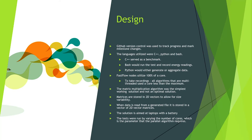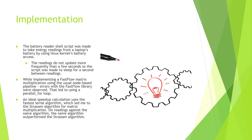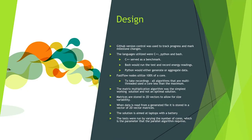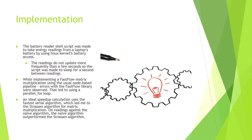Fastflow nodes utilize 100% of a core, so to take recordings, all algorithms that are multithreaded have to use one core less than the maximum. The matrix multiplication algorithm used was the simplest working solution and is not an optimal one. The matrices are stored in 2D vectors to allow for size variability. When data is read from a generated file, it is stored in a vector of 2D vector matrices. The solution is aimed at laptops with a battery. The test was run by varying the number of cores, which is the parameter that the parallel algorithm requires.